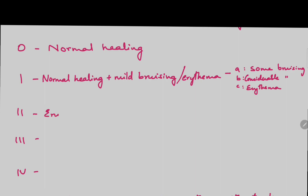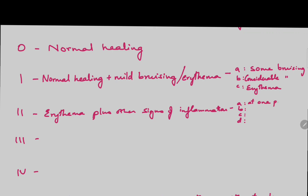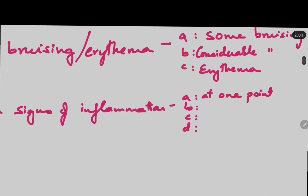Grade 2 is when there is Erythema plus other signs of inflammation. This is divided into A, B, C, and D. 2A is when this occurs at one point. 2B is when it is around the sutures. 2C is when it is along the wound. 2D is when it is around the wound.